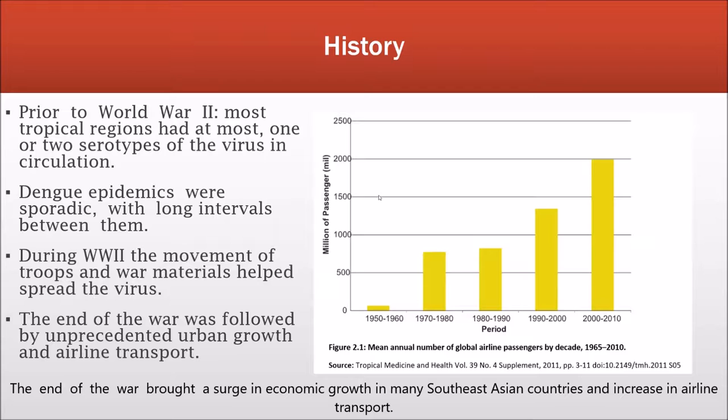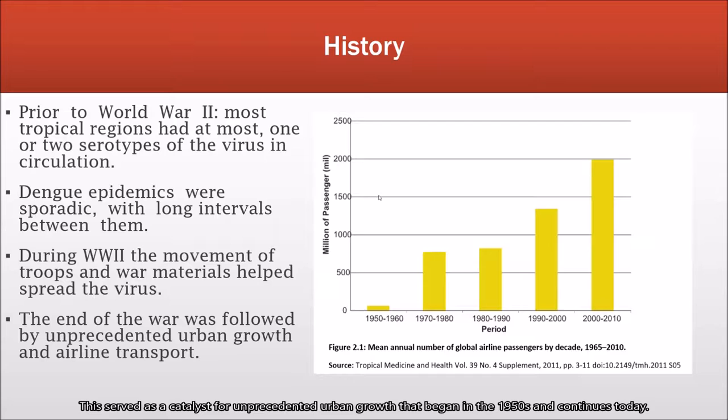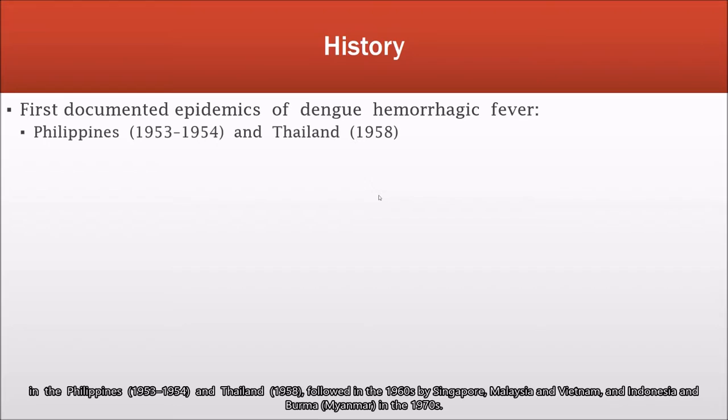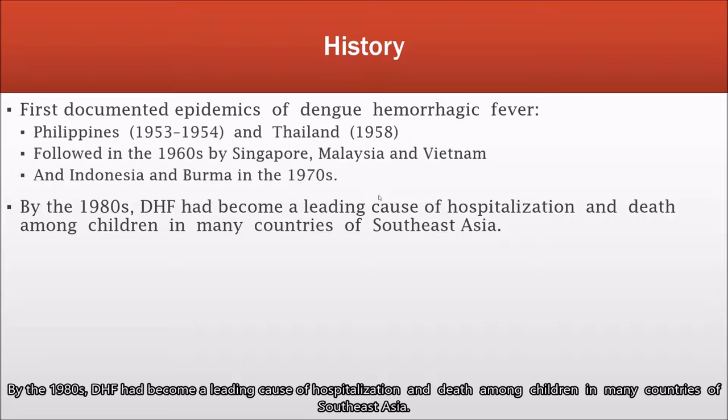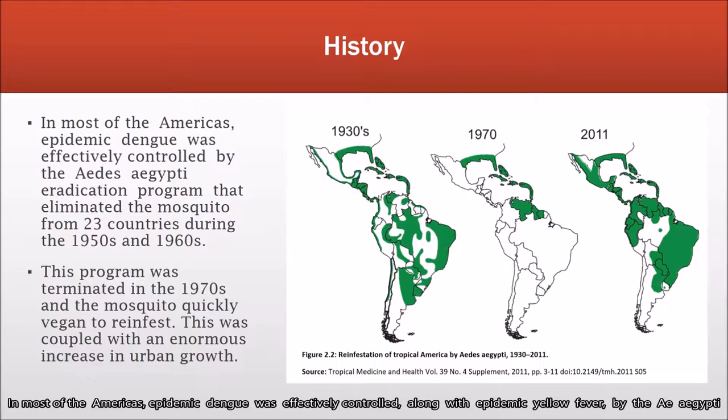The end of the war brought a surge in economic growth in many Southeast Asian countries and an increase in airline transportation. This served as a catalyst for unprecedented urban growth that began in the 1950s and continues today. This coincides with the first documented epidemics of dengue hemorrhagic fever in the Philippines in 1953 to 1954, Thailand in 1958, followed by the 1960s in Singapore, Malaysia, Vietnam and Indonesia, and Burma in the 1970s. By the 1980s, dengue hemorrhagic fever had become the leading cause of hospitalization and death among children in many countries of Southeast Asia.